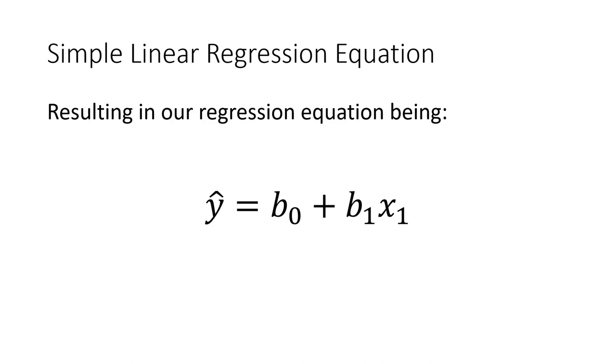Y-hat, the reason we put the hat on top of the y is because it is an estimated value of y. Beta 0 or b0 is simply going to be the intercept.